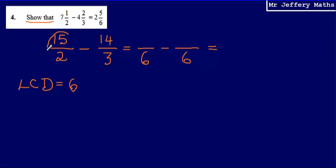Then if I look at this fraction here, what have I multiplied 2 by to reach 6? I can say I've multiplied it by 3. So that means I need to multiply the numerator by 3 as well to give me a fraction which is equivalent. So that gives me 45/6.